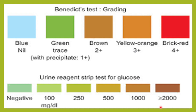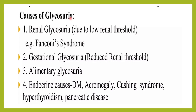Glycosuria can occur due to endocrine causes such as diabetes mellitus, where there is low insulin sensitivity or low insulin levels. It also happens in chronic pancreatitis where there is no insulin production. High glucose levels in the bloodstream are then excreted in the urine. Hormonal abnormalities such as growth hormone excess, Cushing's syndrome, and hyperthyroidism can also cause glycosuria.